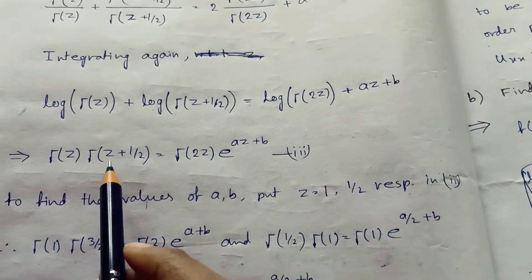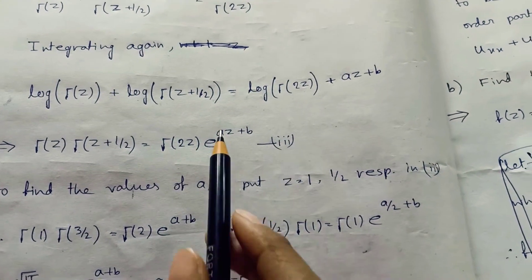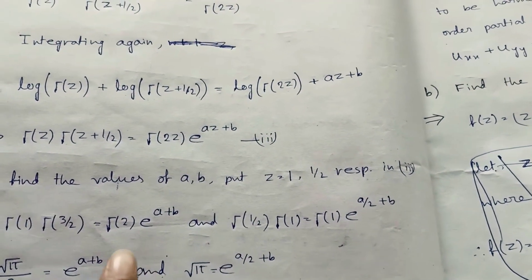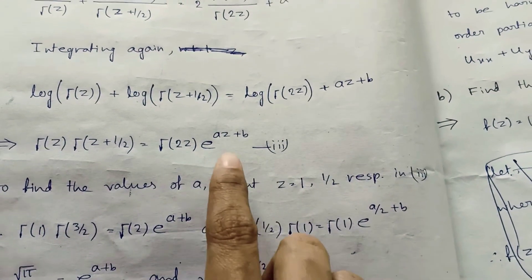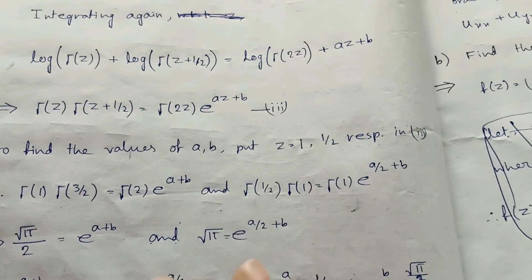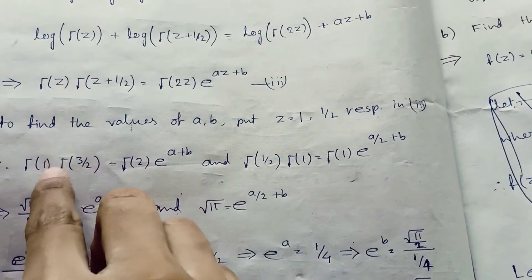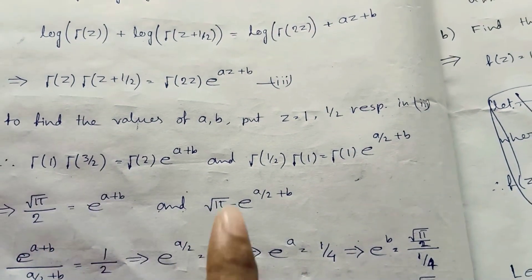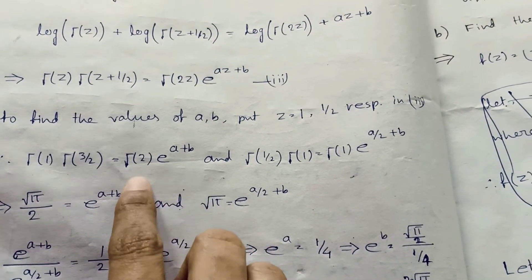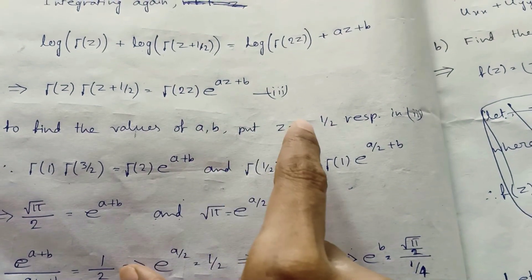We eliminate the log by taking the exponential. This gives γ(z)·γ(z+1/2) = e^b · e^(az) · γ(2z). To find the constants a and b, we substitute z=1 and z=1/2. Putting z=1: γ(1)=1 and γ(3/2) = (1/2)γ(1/2), and γ(1/2) = √π.